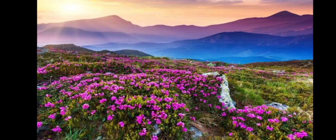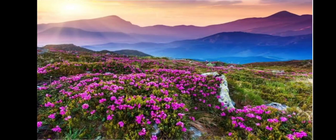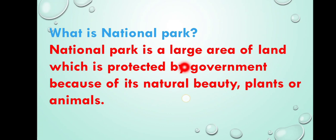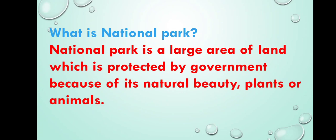The Valley of Flowers is very famous all over the world. Do you know the Valley of Flowers is a national park? A national park is a large area of land which is protected by the government because of its natural beauty, plants, or animals. People can visit this park but are not allowed to harm its natural beauty, plants, or animals. There are 105 national parks in India, all protected by the government of India, with strict laws for the protection of the natural environment, plants, and animals.